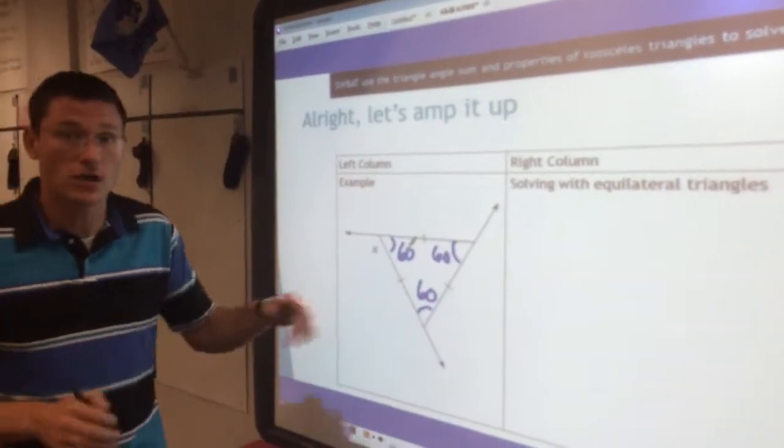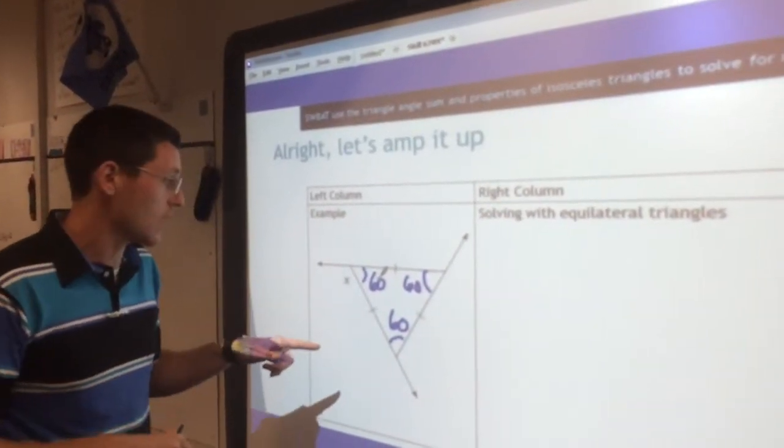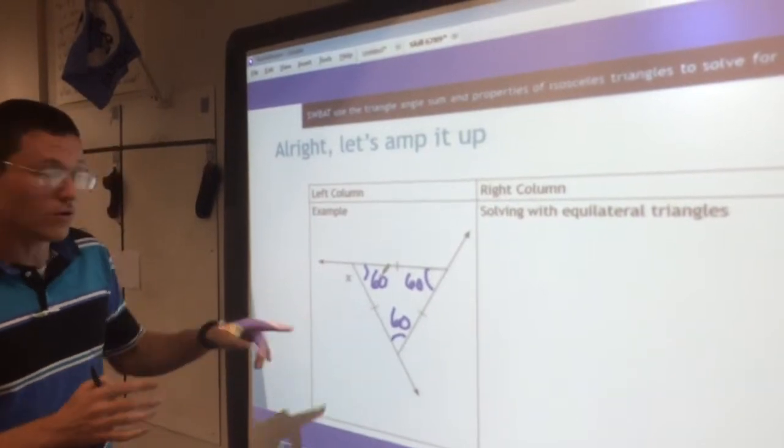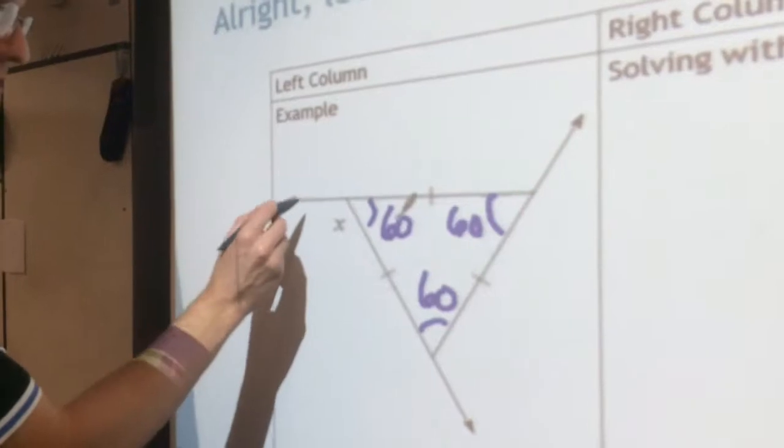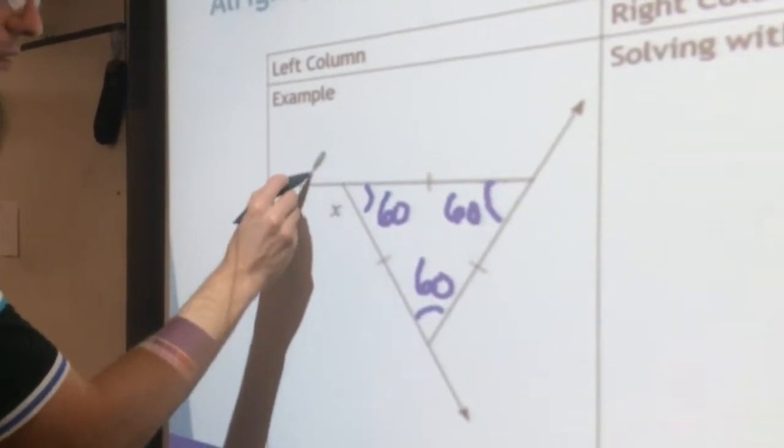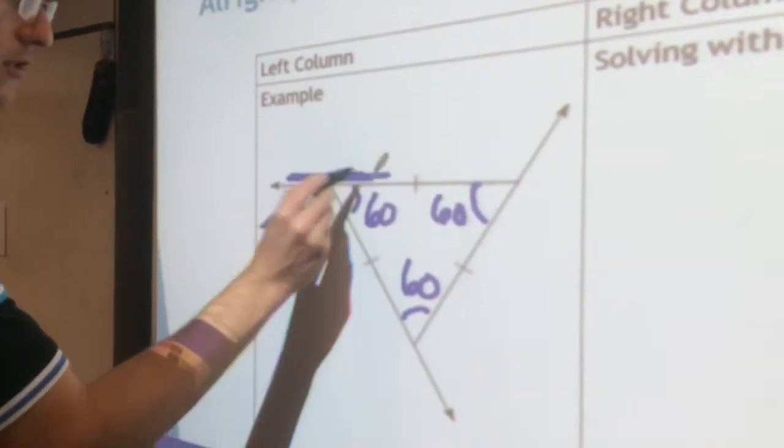If you need a refresher on that, go back to the beginning of the video to check that out. But what I really want to focus on here is how we get from 60 to x. If we look really closely here, this angle x and this angle 60 come together and make a straight line.